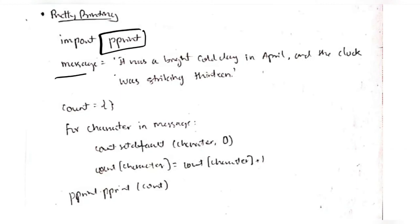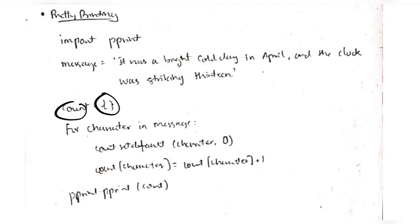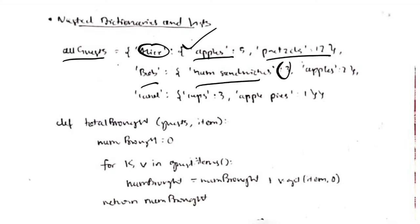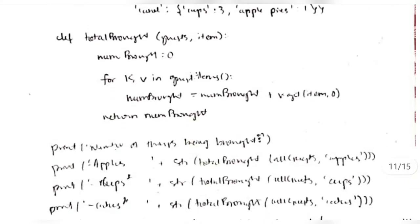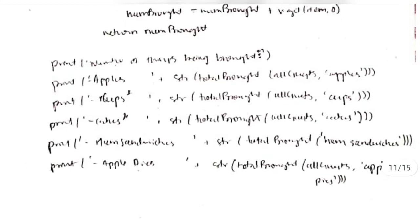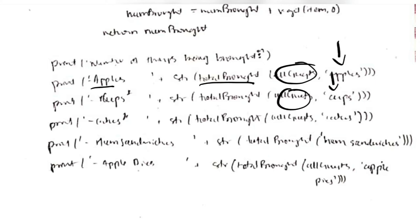Pretty printing requires importing the pprint library. For example, if I have a message and want to count how many times each letter occurs, I create a count dictionary and for each character in the message, increment its count — finally printing the count for each character. We can also have nested dictionaries — a dictionary inside a dictionary. For example, storing how many items each guest wants: Alice wants 5 apples and 12 pizzas, Bob wants 3 sandwiches and 2 apples. Using two variables k and v in guest_items, we can calculate the total number of items brought.